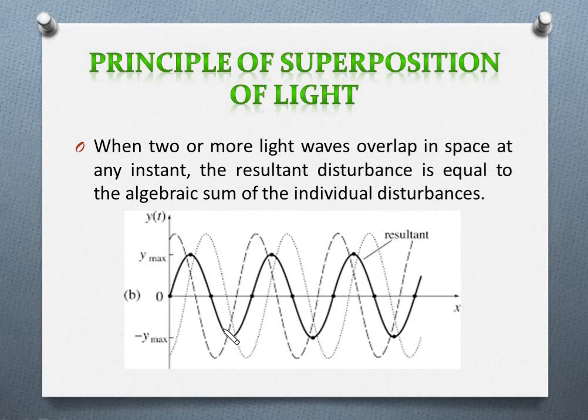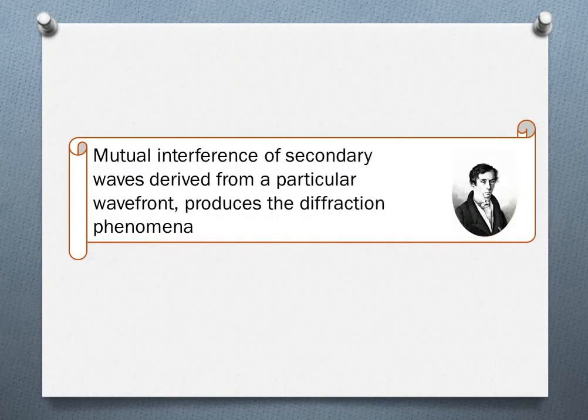Using these ideas, diffraction is described as the mutual interference of secondary wavelets derived from a particular wave front. Suppose we place a light source in front of a diffracting element — then secondary wavelets arising from the diffracting element move toward the screen, overlap with each other, and the resultant disturbance observed on the screen is nothing but the diffraction pattern.